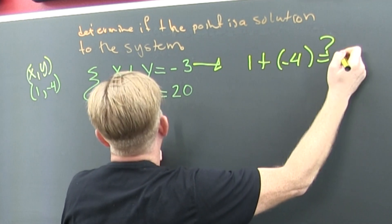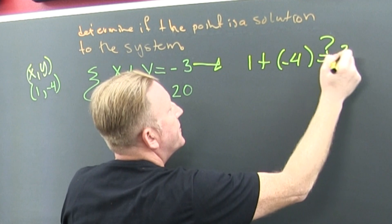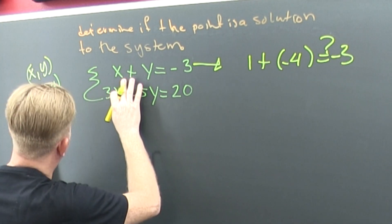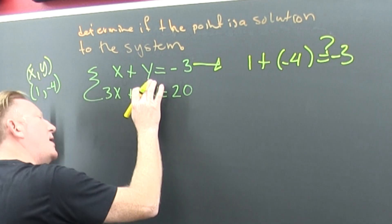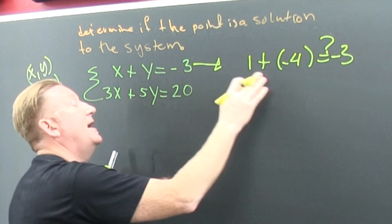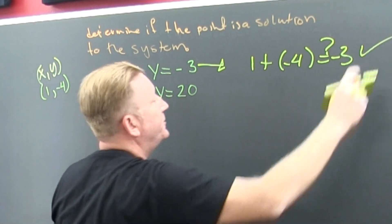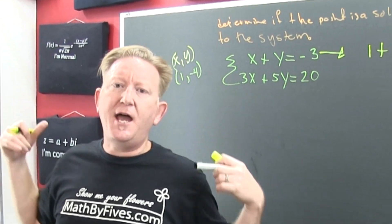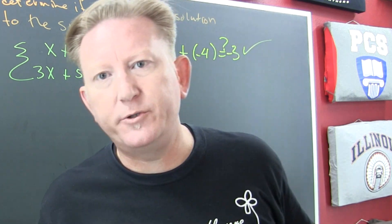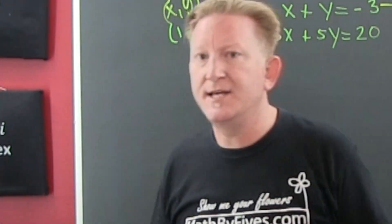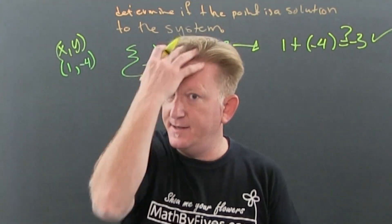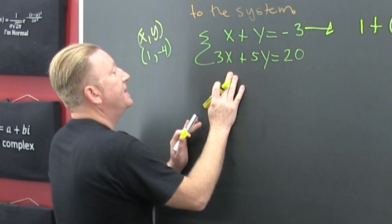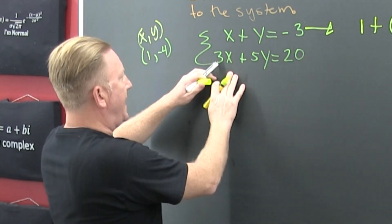Does that equal negative 3? I put the X where the X goes, I put the Y where the Y goes, and I see that's true. So, if that point satisfies both of the equations, then that point is a solution to the system.